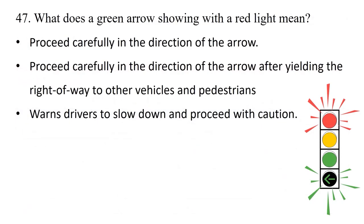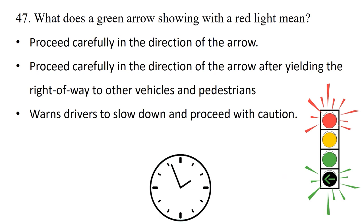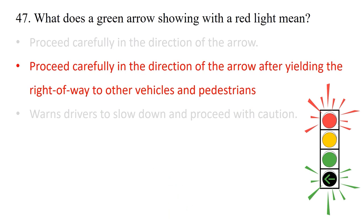Question: What does a green arrow showing with a red light mean? Option 1: Proceed carefully in the direction of the arrow. Option 2: Proceed carefully in the direction of the arrow after yielding the right of way to other vehicles and pedestrians. Option 3: Wants driver to slow down and proceed with caution. The answer is option 2: proceed carefully in the direction of the arrow after yielding the right of way to other drivers and pedestrians.